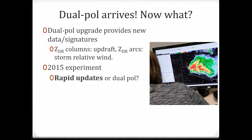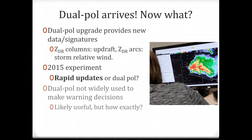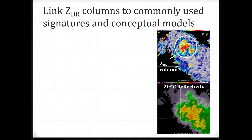That got me thinking — DualPol, which has a lot of apparent good applications, maybe it's not being used all that much. It did seem that perhaps DualPol is not widely used to make warning decisions, possibly because there's not a lot of solid research linking DualPol specifically to warning decisions and how a DualPol signature can actually be used to support a warning decision. So we decided to really focus on one DualPol signature — the ZDR column — and try to compare it to signatures frequently used by forecasters, in an effort to link it into existing scientific conceptual models.